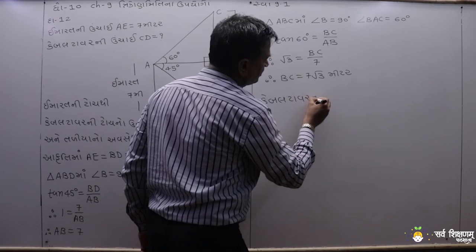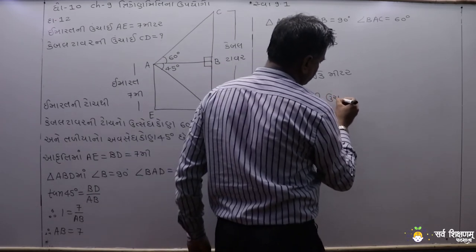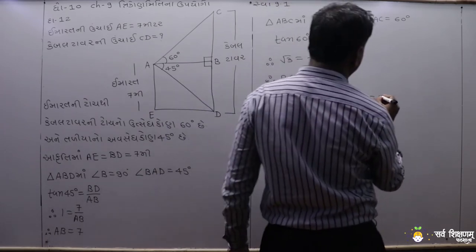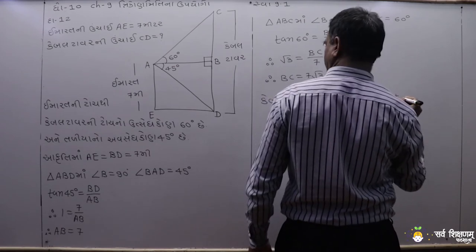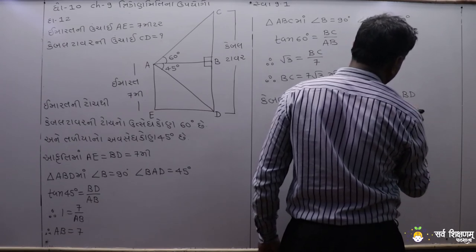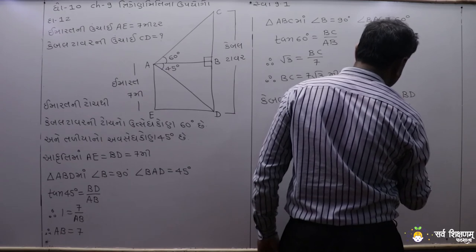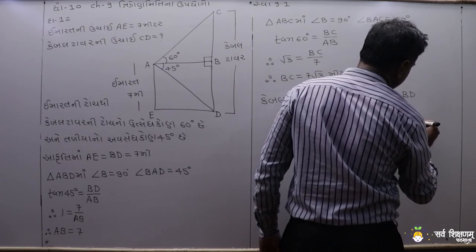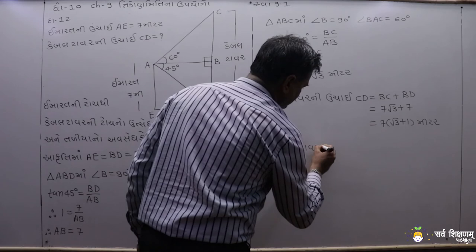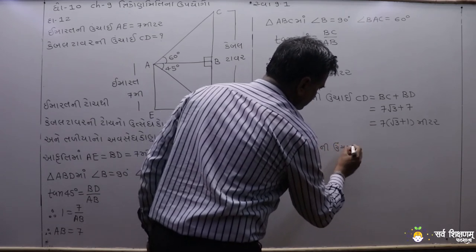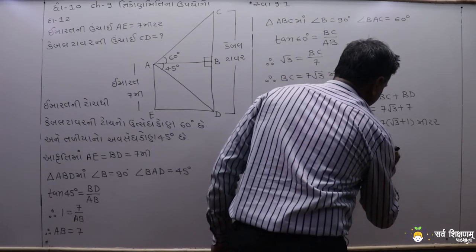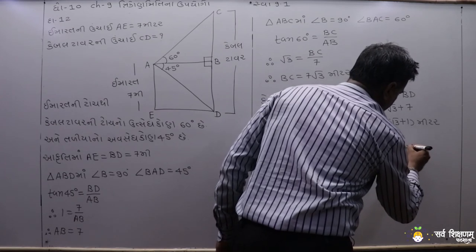Cable tower. cd plus bd equals 7 root 3 plus 7, which is 7(root 3 plus 1). The cable tower near the top is 7(√3 − 1) meters.